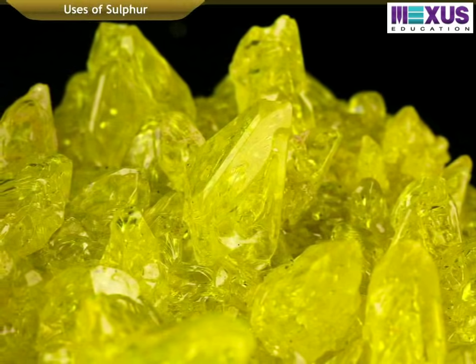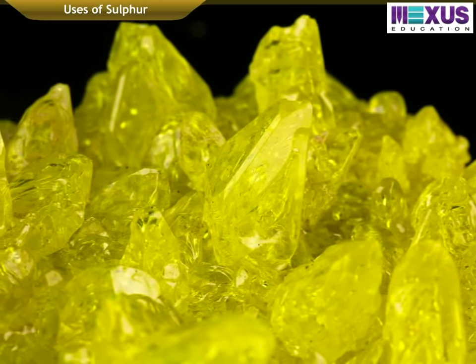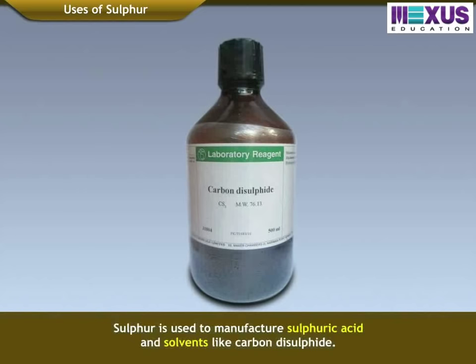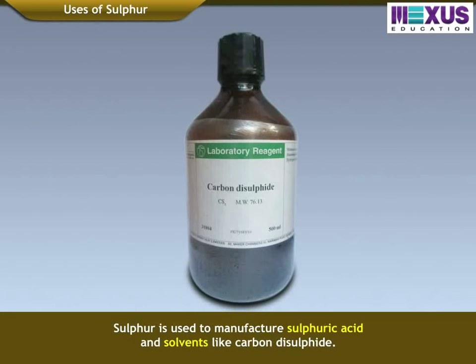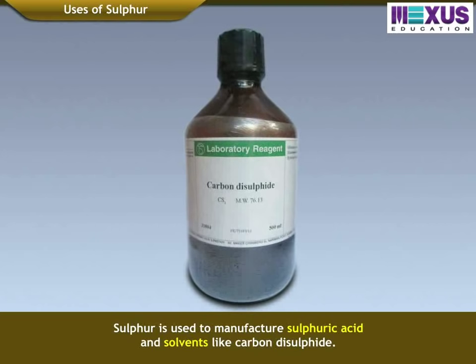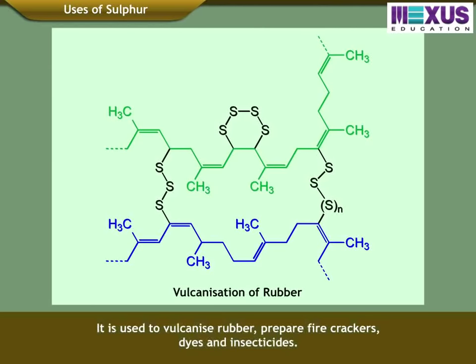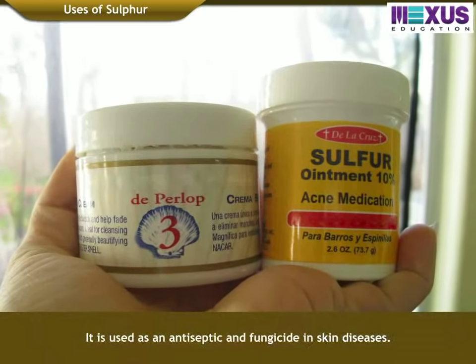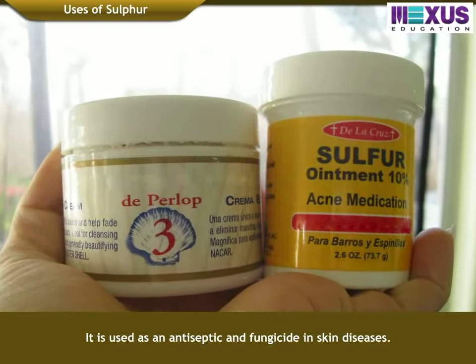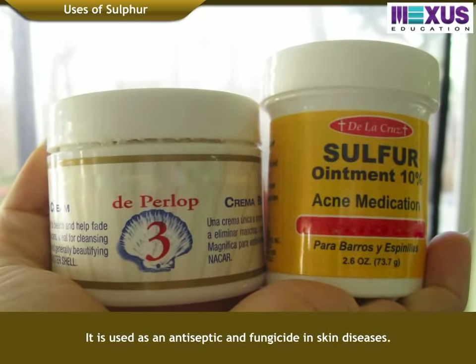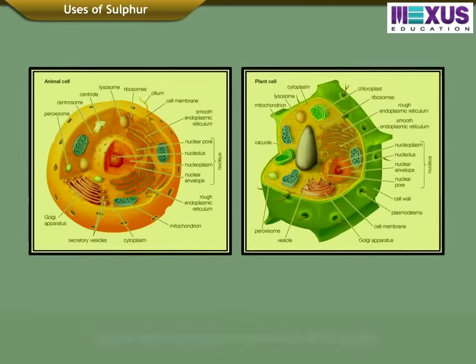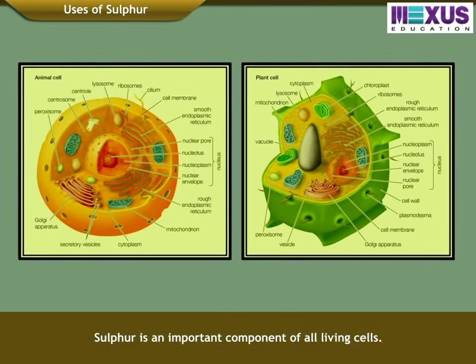Sulphur has different uses. It is used to manufacture Sulphuric Acid and solvents like Carbon Disulfide. It is used to vulcanize rubber, prepare firecrackers, dyes, and insecticides. It is also used as an antiseptic and fungicide in skin diseases. Sulphur is an important component of all living cells.